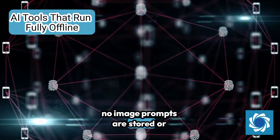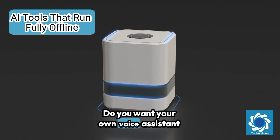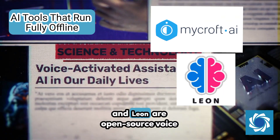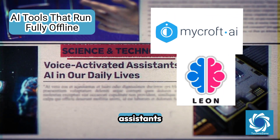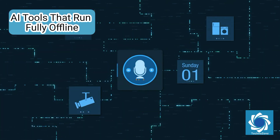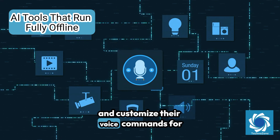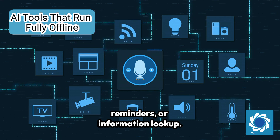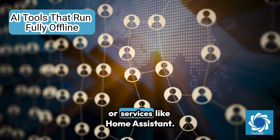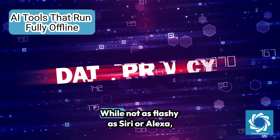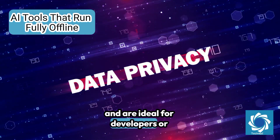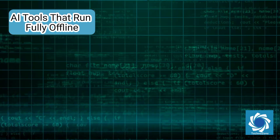Do you want your own voice assistant without Google or Amazon listening in? Tools like Mycroft AI and Leon are open-source voice assistants that work offline or with limited connectivity. You can install them on a Raspberry Pi, PC, or virtual machine and customize their voice commands for home automation, reminders, or information lookup. They can even connect to local databases or services like Home Assistant. While not as flashy as Siri or Alexa, they prioritize data privacy and are ideal for developers or tech-savvy users.